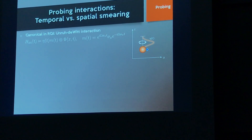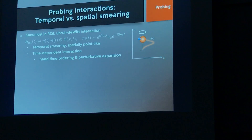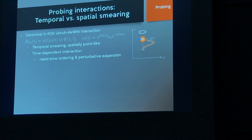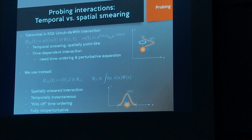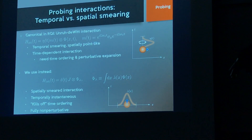Canonically in RQI, the typical interaction is between a qubit and the field — point-like in space and spread out in time with some time dependency in the coupling. Because we're temporally smearing the interaction, we need to perform a time-ordered exponential and do a perturbative expansion. Instead, we're going to use spatially smeared, temporarily instantaneous interactions, which kills off the time ordering so we can do fully non-perturbative interactions and unitaries.